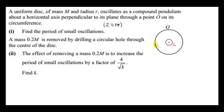For a uniform disc, the moment of inertia about the center is half the mass of the disc times the radius of the disc squared: I_C = ½MR².